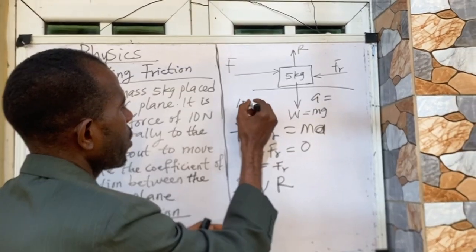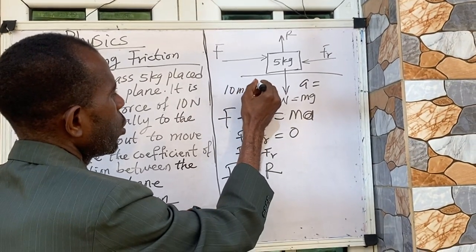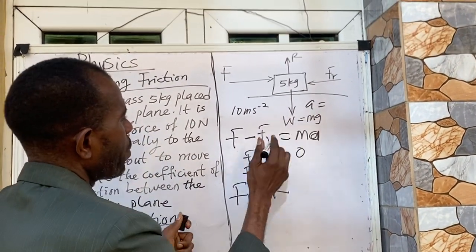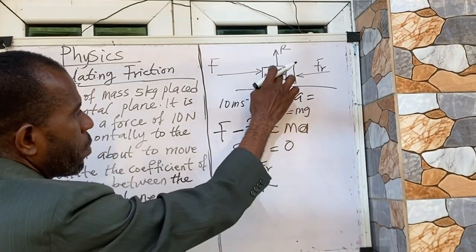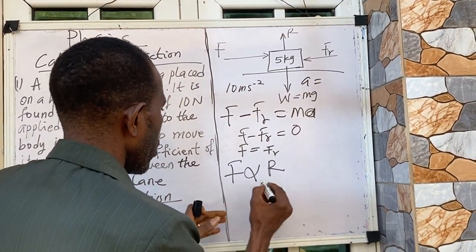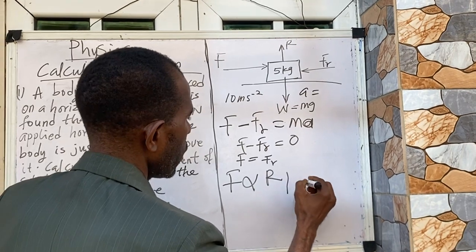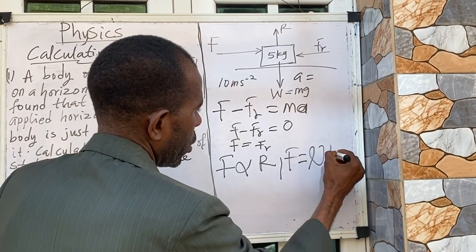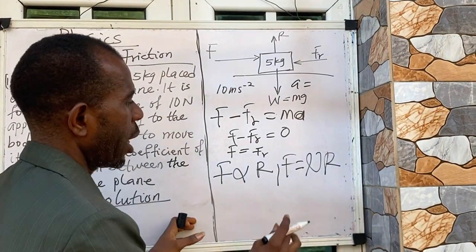The value of acceleration due to gravity is usually 10 meter per second square. Which means in this case now I am going to have my mg there which is the mass times the acceleration due to gravity.